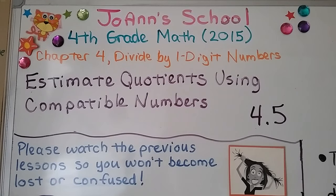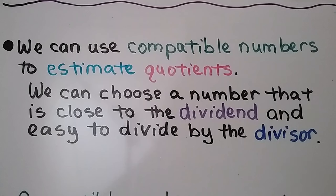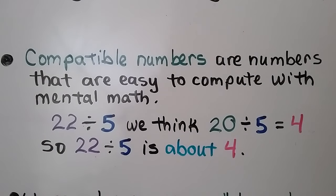Lesson 4.5: Estimate Quotients Using Compatible Numbers. We can use compatible numbers to estimate quotients. We can choose a number that is close to the dividend and easy to divide by the divisor. Compatible numbers are numbers that are easy to compute with mental math.